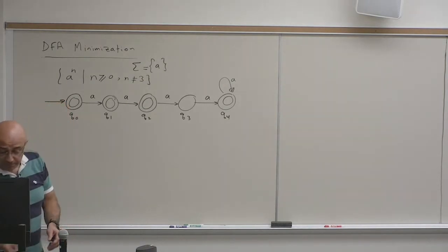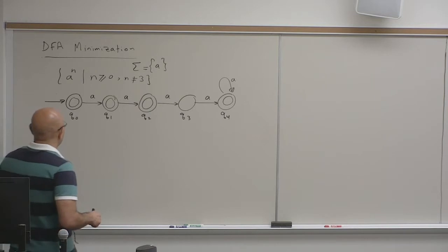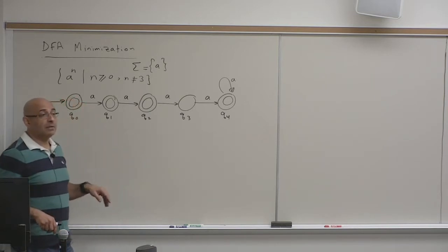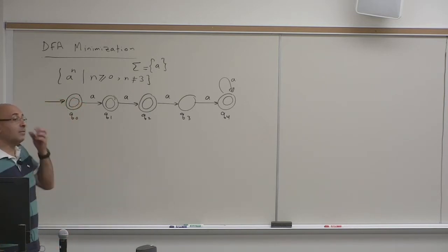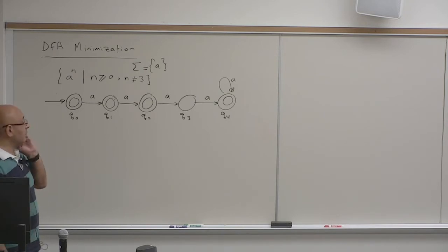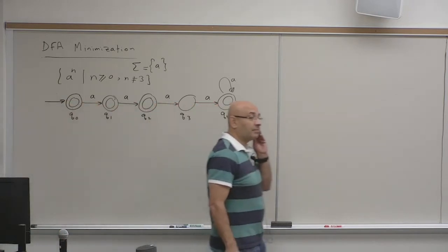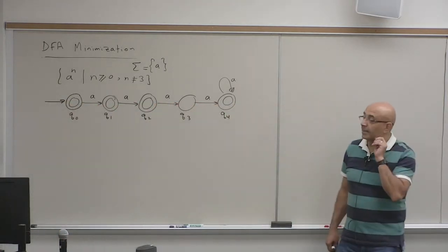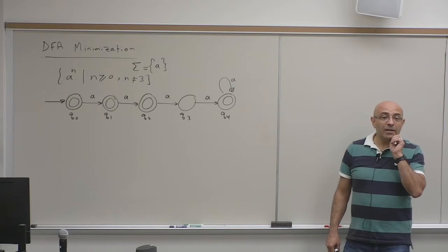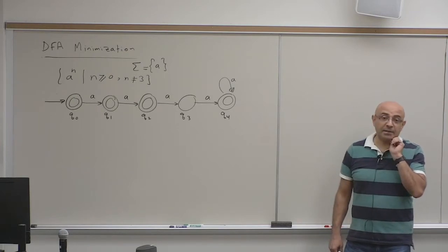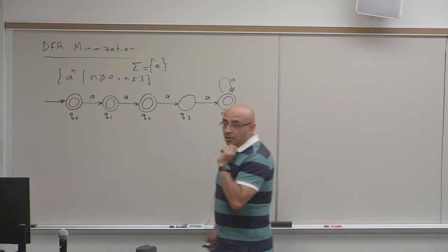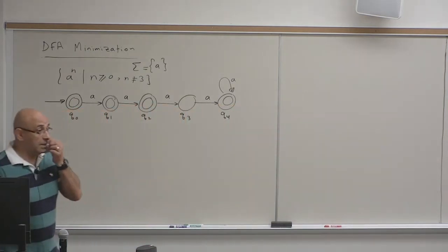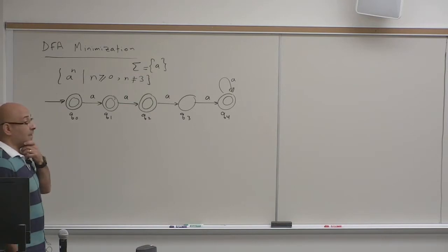Let's try to do it by inspection first. Do you think that this is minimizable? Can you find two states that are equivalent — two equivalent states that we can merge? In fact, you will not find any. This is minimal. But we'll see how the algorithm — the systematic procedure — proves that it's minimal.